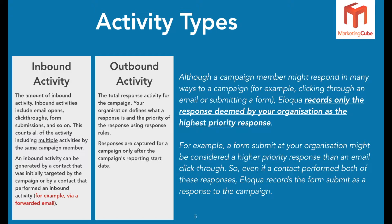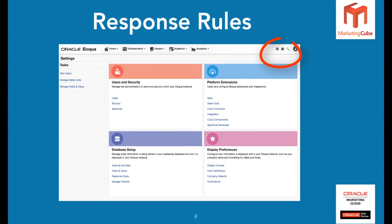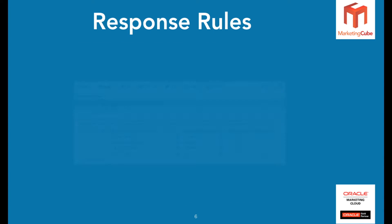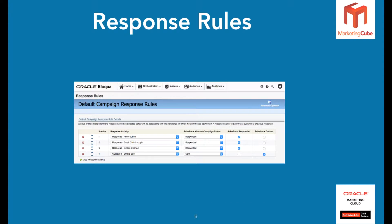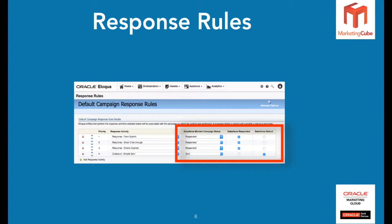Let me walk you through how to do that - it's a fairly simple process, but you will need administrator access. When you access the Settings area of Eloqua, in the Database Setup area there's a section called Response Rules. If you click on Response Rules, you're brought to a screen that looks just like this, where you're able to determine exactly what the priority one, two, three, and four response activities are. You can move those around should you want to at some point. Depending on the CRM you're integrated with - whether it be Salesforce, NetSuite, Oracle, etc. - you'll see corresponding headings there, and that information will be familiar to Salesforce users in relation to the Campaign Member Status.